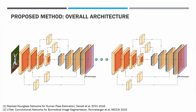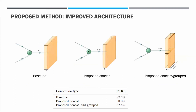Our architecture largely follows the hourglass original idea. We use a cascade of four networks that use the previously presented building block. In addition to this, we explore a few different ways of combining the information from multiple resolutions. As the results show, concatenating the data coming from different resolutions works better than simply summing it directly. Also, a group convolution approach performs similarly well in our tests on the MPI dataset.